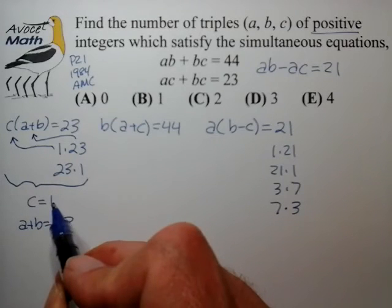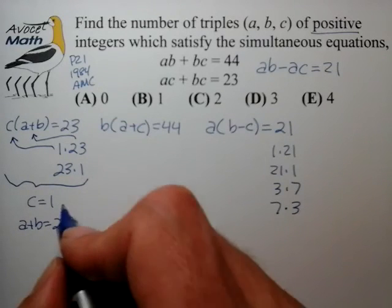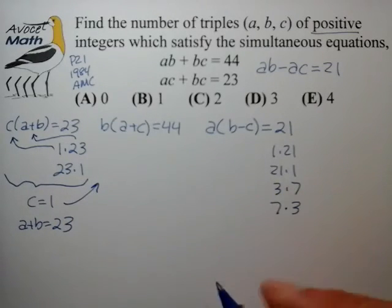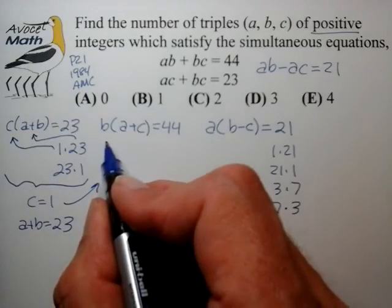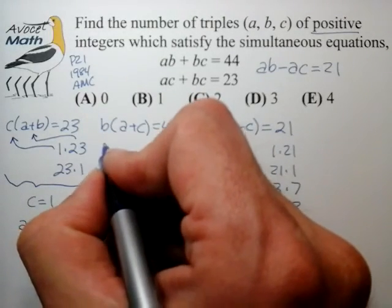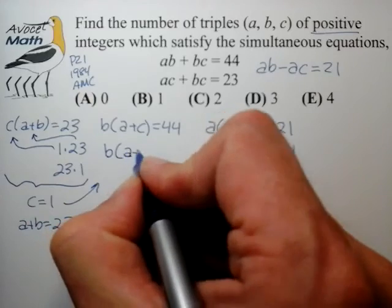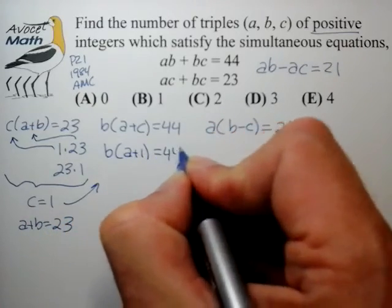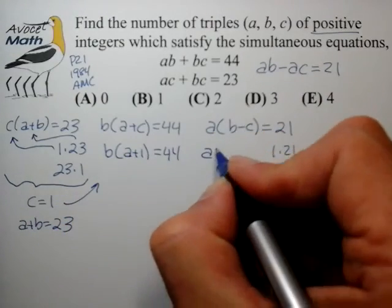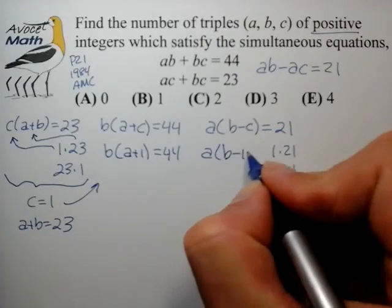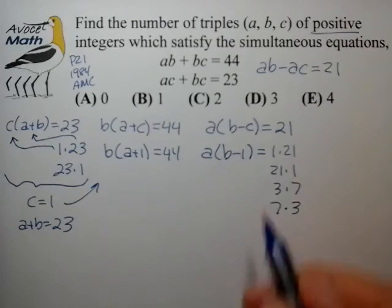So we can take the c value of 1 that we've determined and plug it into the other two equations. From that we find that the second equation can be written as b times (a plus 1) equals 44, and a times (b minus 1) equals 21.